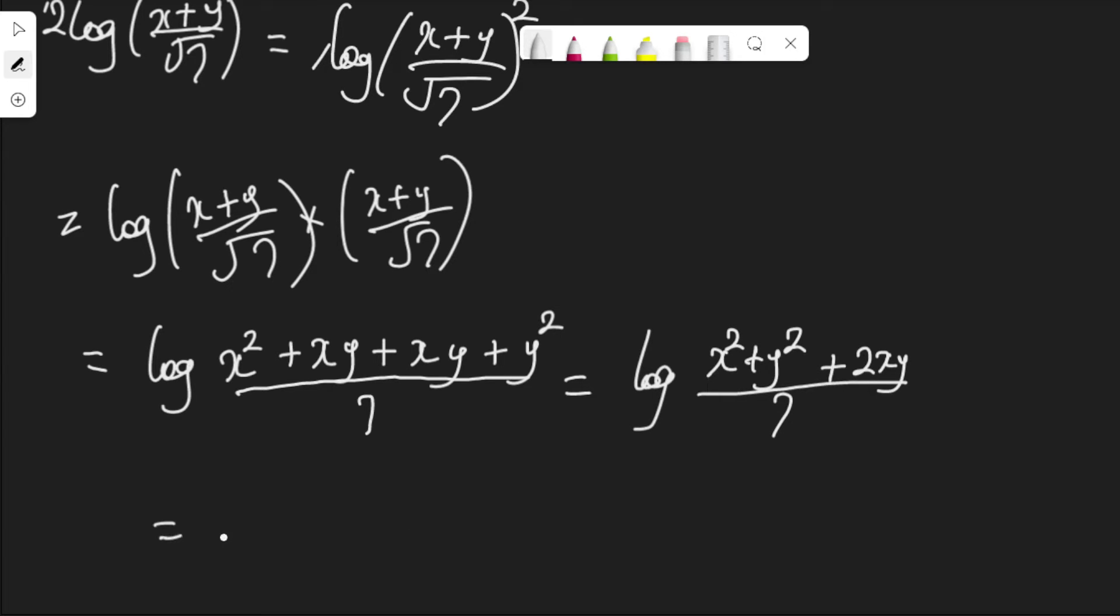So, the logarithm becomes log 5xy plus 2xy over 7. And that is log 5xy plus 2xy is 7xy over 7.